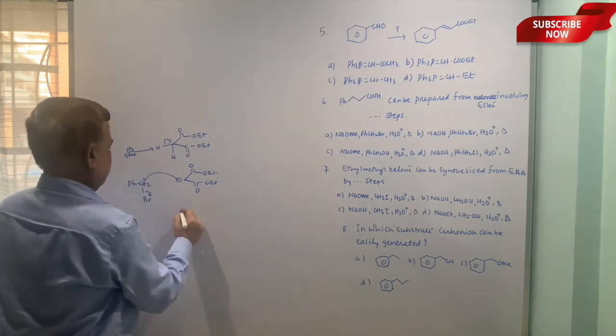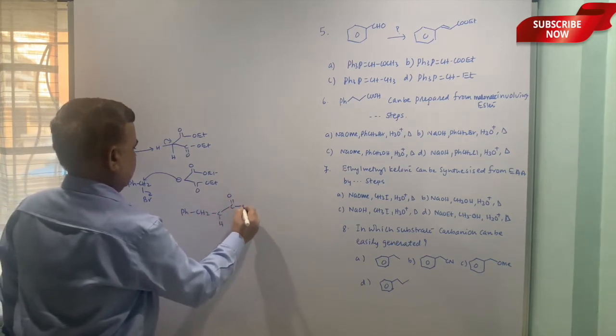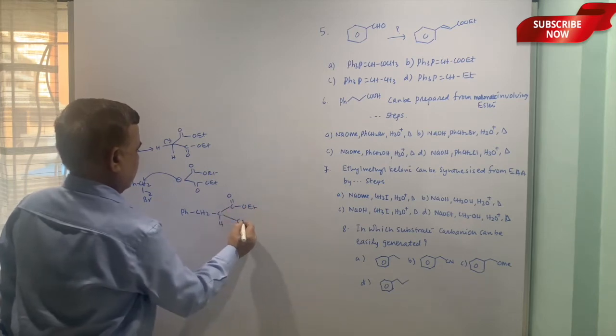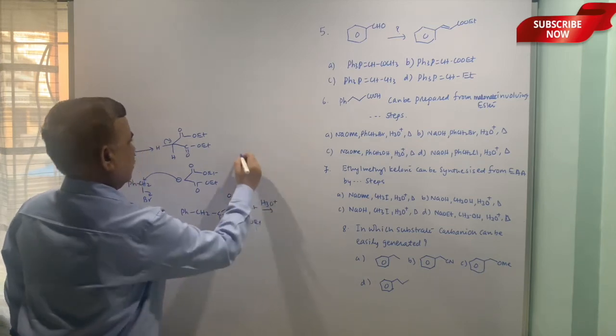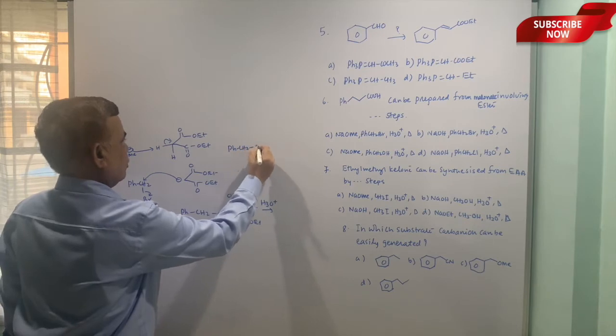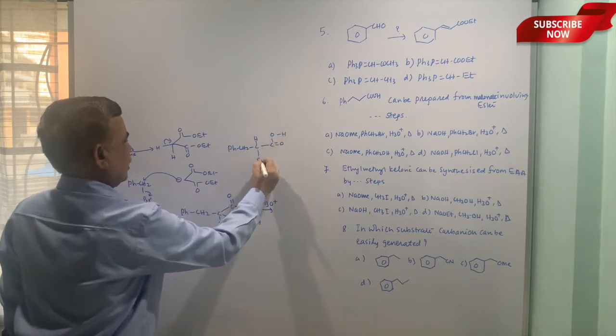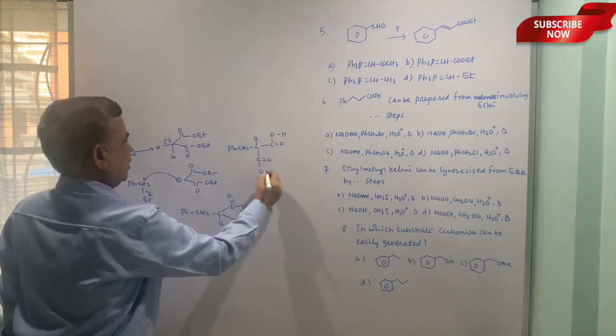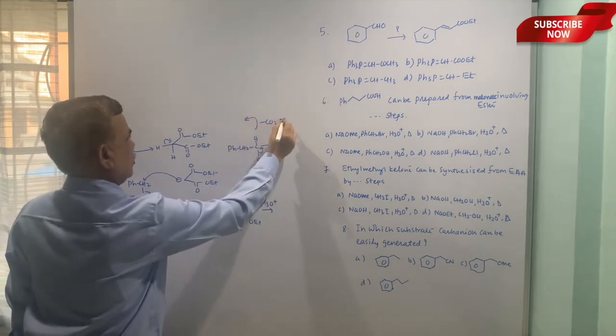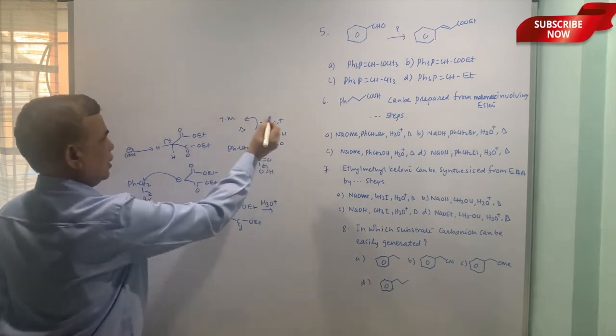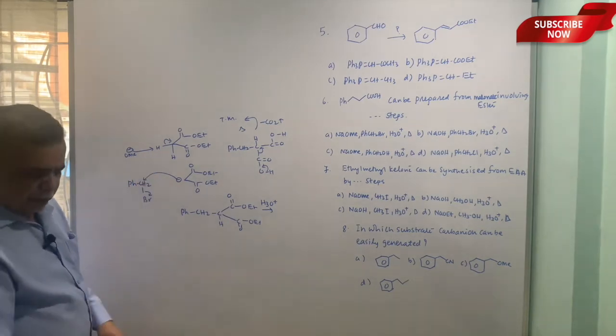And then Ph-CH2-Br, the alkylation. So you can introduce Ph-CH2 group here straightaway. CH2-Ph-CH-COOEt-COOEt. If you hydrolyze it, this becomes Ph-CH2-CH-COOH-COOH. Now this is since it is beta-keto acid, it undergoes decarboxylation upon heating and you get the target molecule, that is Ph-CH2-CH2-COOEt.